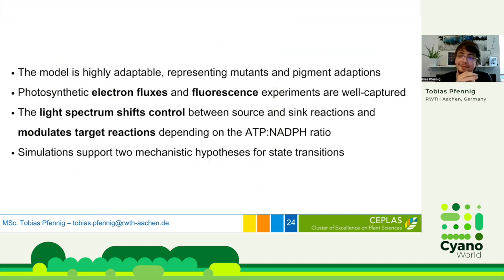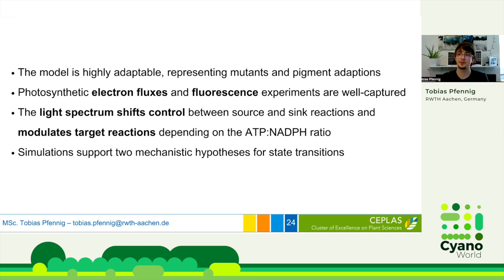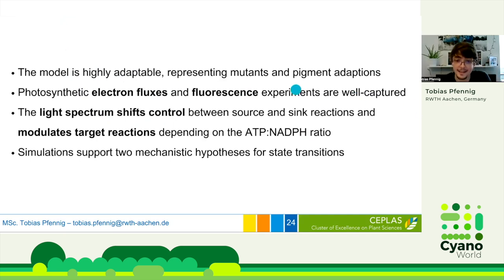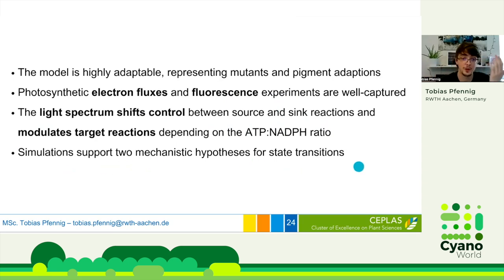With this, I would like to conclude and come to a summary. I showed you a cyanobacterial photosynthesis model curated to represent the electron transfer chain in detail, with reactions characteristic for cyanobacteria. We included high adaptability — both reactions to simulate mutants and light handling to simulate different light conditions and pigment conditions. We can simulate photosynthetic electron fluxes and pulse-amplitude modulation experiments, which are well captured in the model. We also saw how the light spectrum governs where control in our system lies, especially between source and sink reactions, and that optimal light conditions for biotechnological target reactions differ, very likely connected to the ATP-to-NADPH ratio. We also showed we can test mechanistic hypotheses, supporting two of four proposed mechanisms for state transitions. This model is already publicly available and submitted as a preprint.